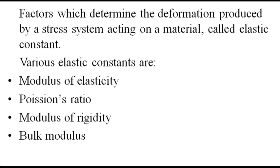Elastic constants are the constants within the limit for which Hooke's law is obeyed. There are various types of elastic constants we have to study. The first type is modulus of elasticity, second is Poisson's ratio, third is modulus of rigidity, and fourth is bulk modulus. These four types of elastic constants we have to study.